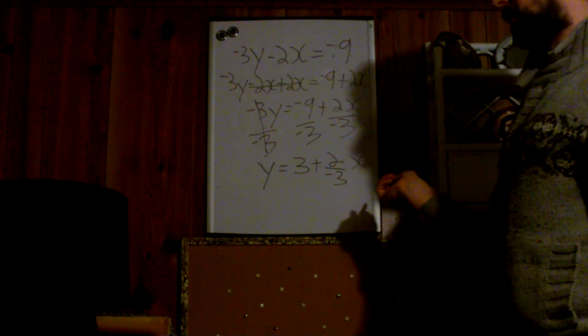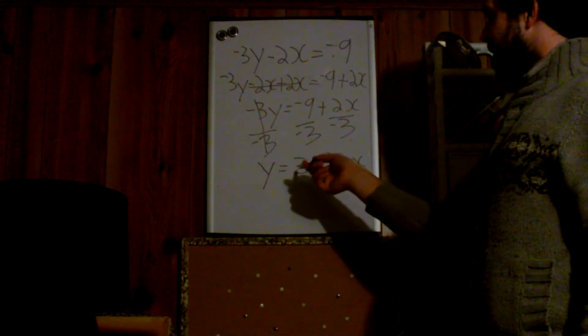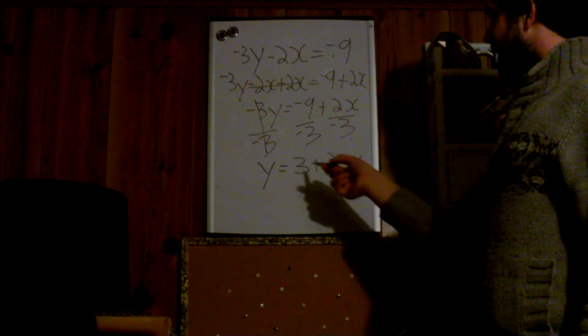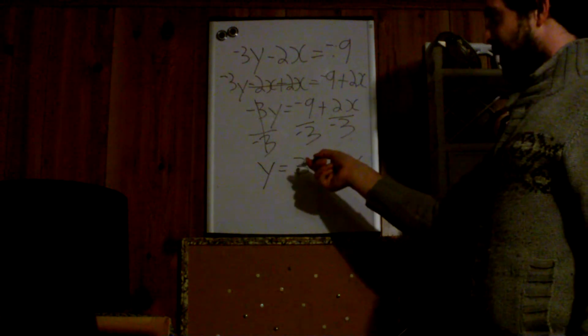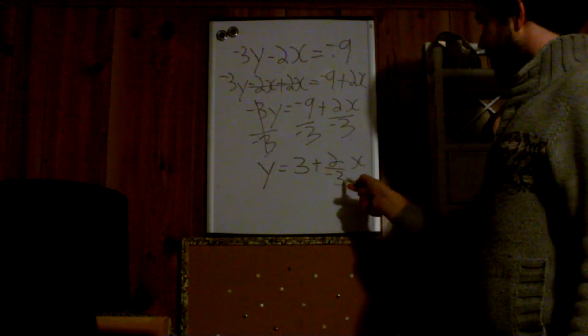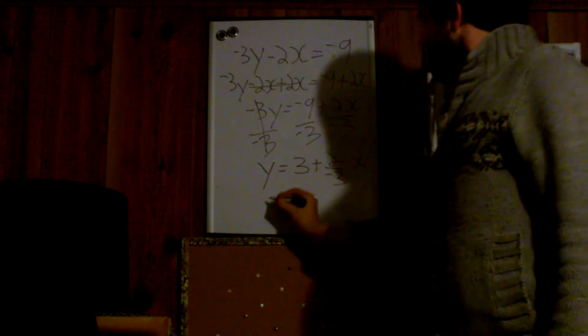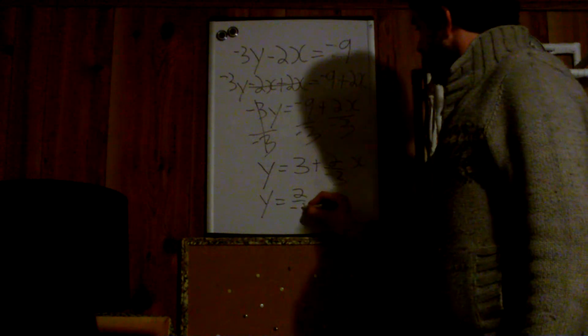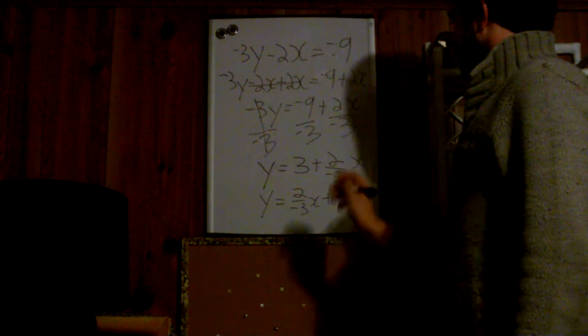So are we done? No. It kind of looks like we're done, but remember it's supposed to be y equals mx plus b. Our b is where our m should be, and our m is where our b should be. Our y-intercept is in the slope area and our slope is in the y-intercept area. So this has to move here and this has to move here. Now it's done.